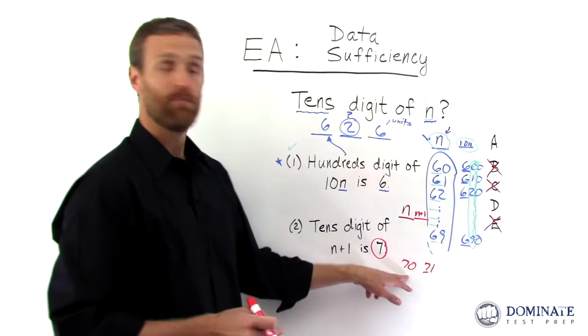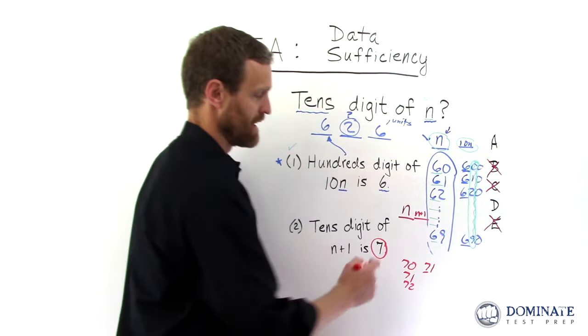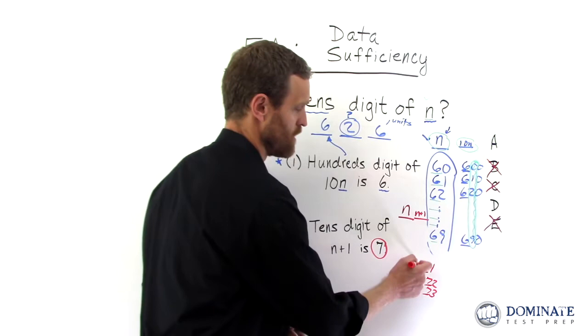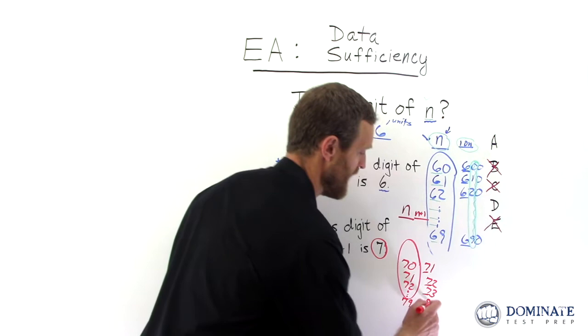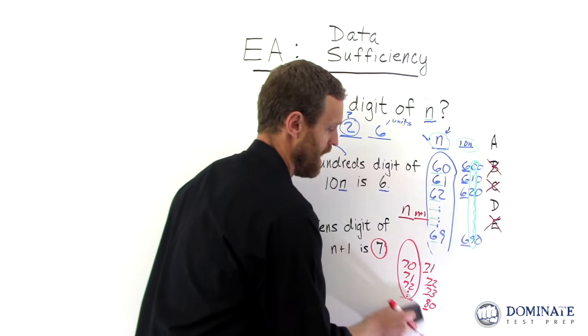Could be 71. Could be 72, right? Because in all cases, when I add 1, 72, 73, the tens digit is 7. So these are allowable values of n. And we would go all the way up to 79? No, because at 79, when I add 1, it gets to 80. The tens digit is no longer 7. So 79 is not an allowable value of n. You know, we could go all the way up to 78.